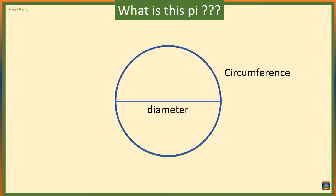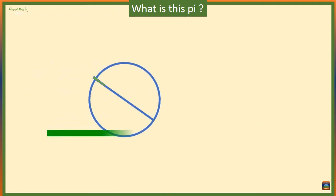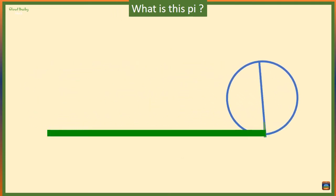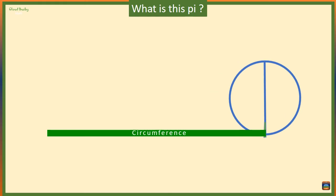It indicates or shows how many diameters make the circumference of a circle. Now if we spin this circle once, it leaves a track that is equal in length to its circumference. We want to see how many diameters do we need to make this length that is equal to the circumference of the circle.